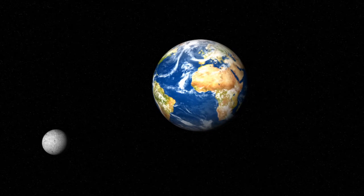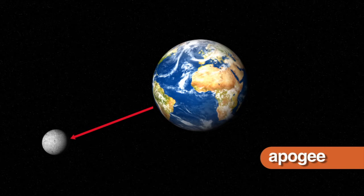When the Moon is at its farthest point from Earth, we call it its apogee. During apogee, the Moon appears smaller.